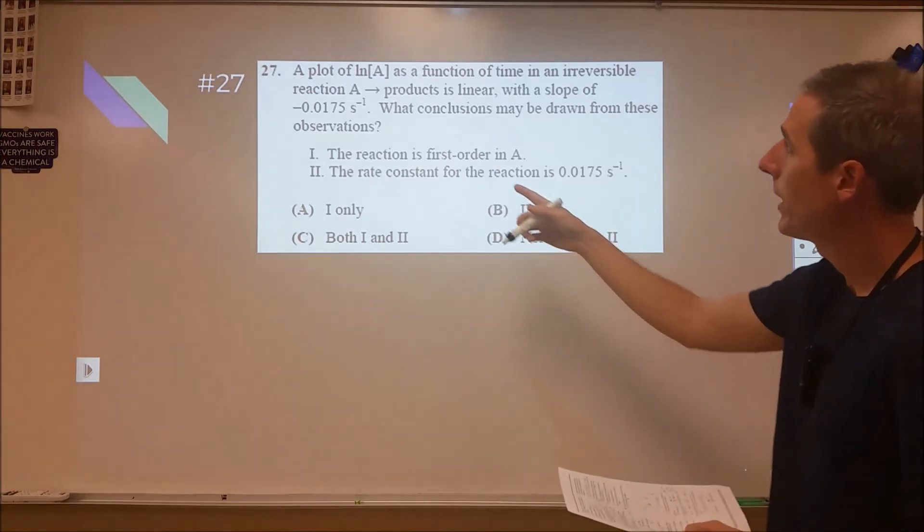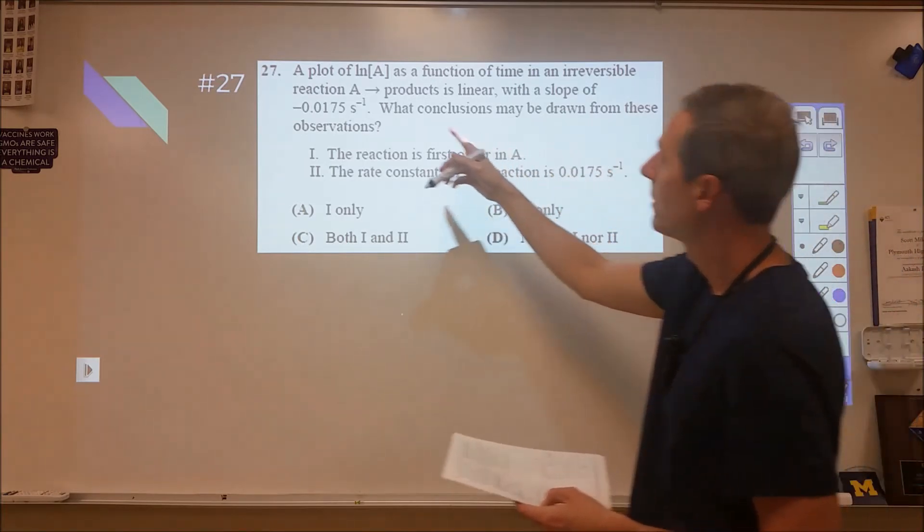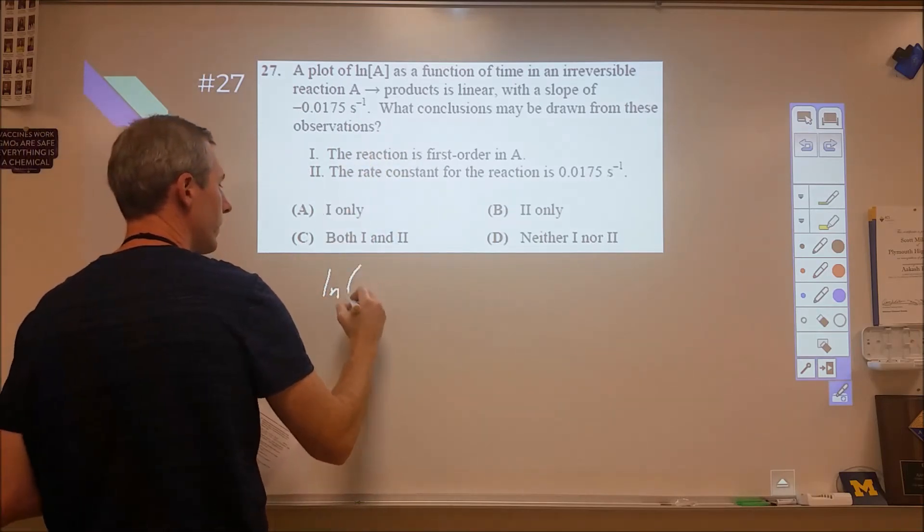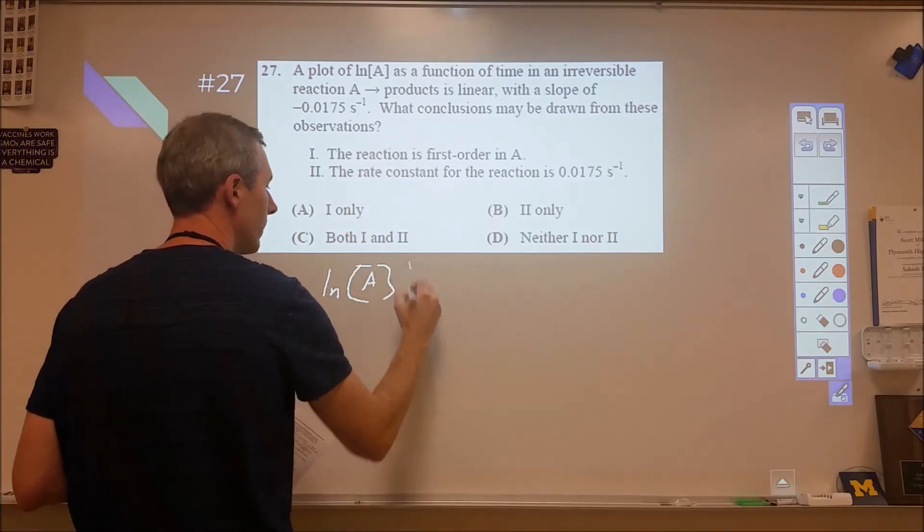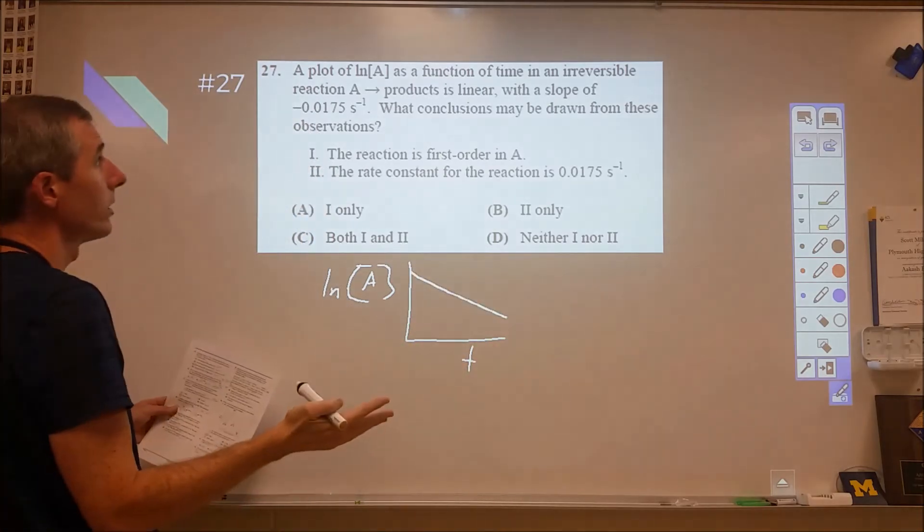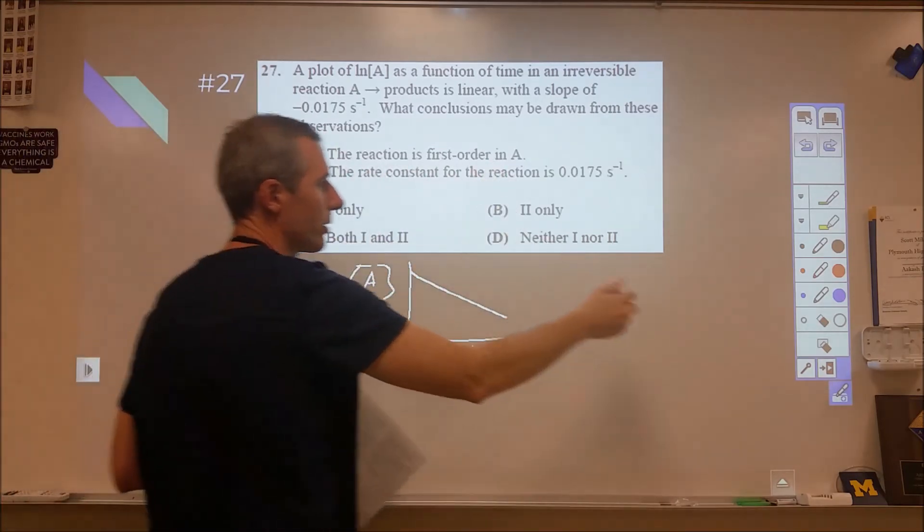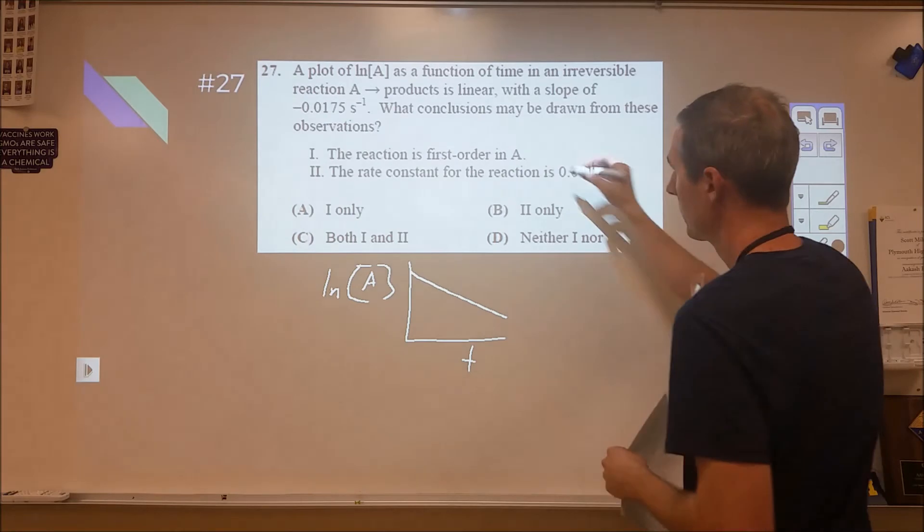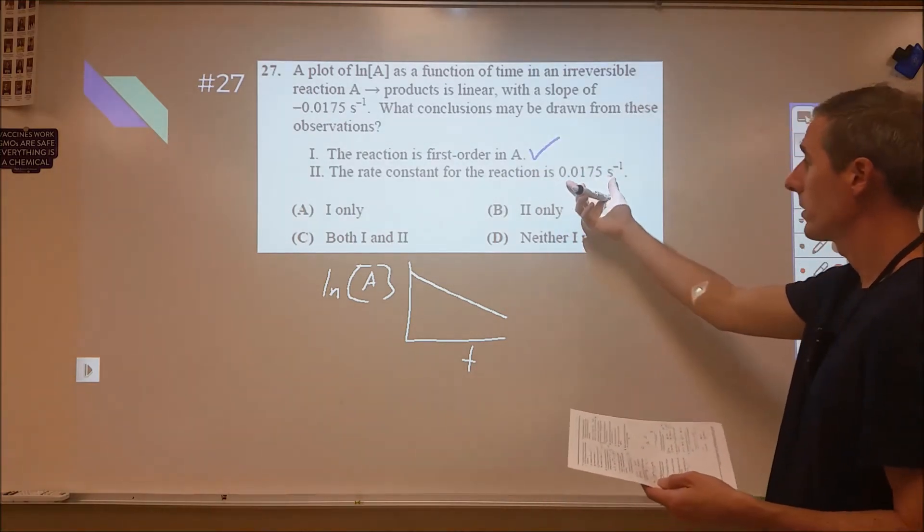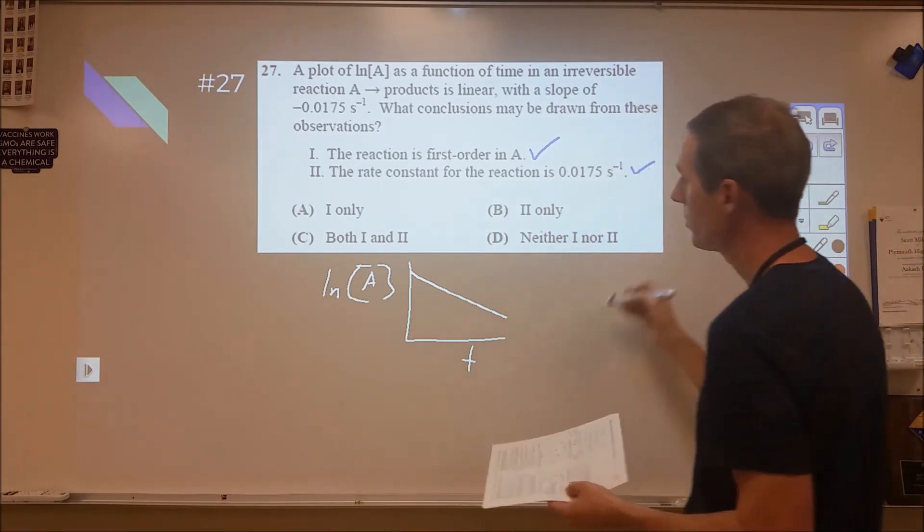For 27, we're looking at a plot, natural log versus time. We're looking at reaction A turns into products. So if we get natural log of concentration of A versus time and we end up with a linear result, the slope is negative something. We have confirmation that the reaction is first order in A. And then the slope, since it's first order, since the slope is equal to the rate constant, we know that this is also true. Both of those are true.